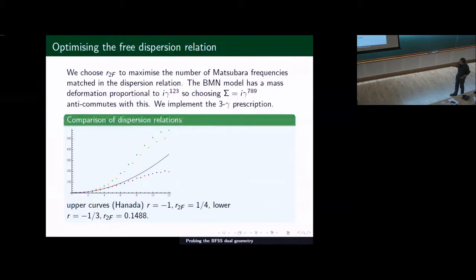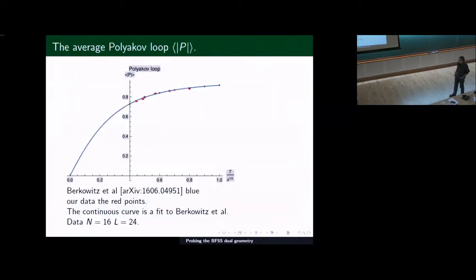We chose our sigma to be the three gamma one, because this can anti-commute with the three ones in the mass deformation. So that was a preferable choice. And these are the parameters that were optimal for us.